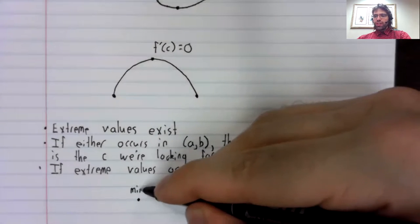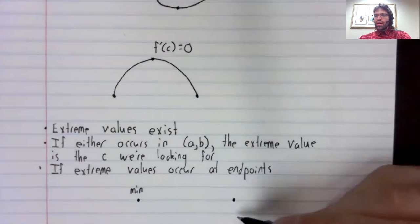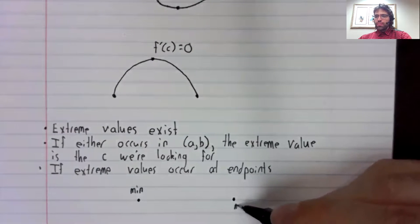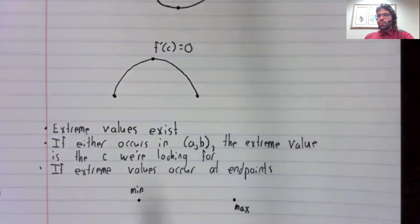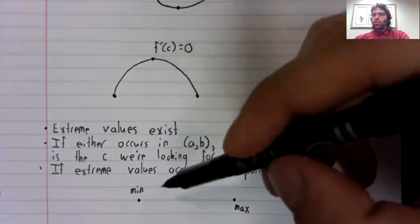So if one of the end point is the minimum and the other is the maximum, and these values are the same, what's this function doing?